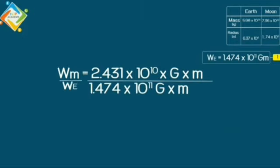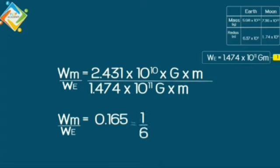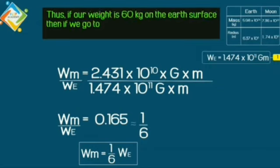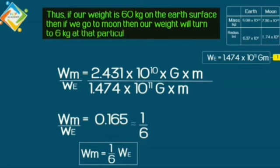Now, WM by WE will give you the answer 0.165, which is approximately equal to 1 by 6. So, we can say that weight of the object in Moon is equal to 1 by 6, the weight of the object in Earth. So, if you are weighing 60 kg on the surface of the Earth, then you will be weighing only 10 kg on the surface of the Moon. Because WM is equal to 1 by 6 times WE.